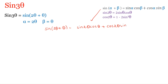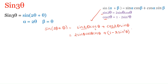After substitution, this gets modified to sin 2θ · cos θ + cos 2θ · sin θ. Now we substitute the sin 2θ formula: in place of sin 2θ we write 2 sin θ cos θ, and the cos θ remains as it is. In place of cos 2θ we substitute the formula 1 − 2 sin²θ, multiplied by sin θ.